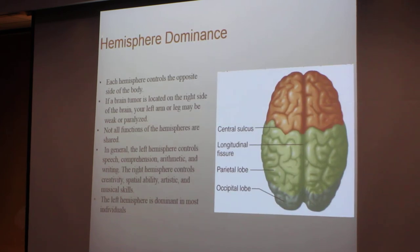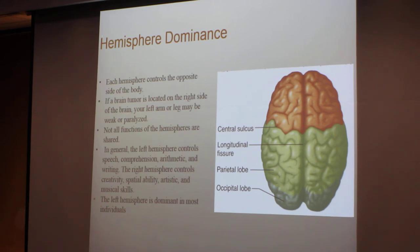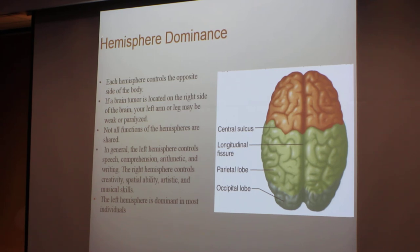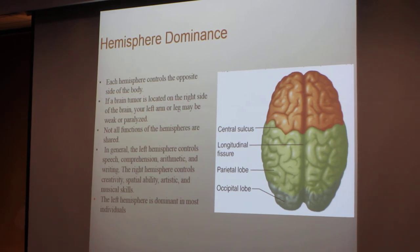Hemisphere dominance explains which part of the brain is more dominant. Each hemisphere controls the opposite side of the body — if a brain tumor is located on the right side of the brain, your left arm and leg may be paralyzed. Not all functions of the hemispheres are shared. In general, the left hemisphere controls speech, comprehension, arithmetic, and writing. The right hemisphere controls creativity, spatial ability, artistic, and musical skills.